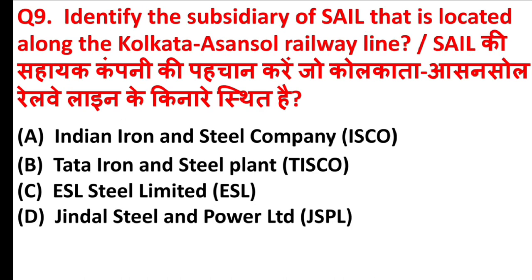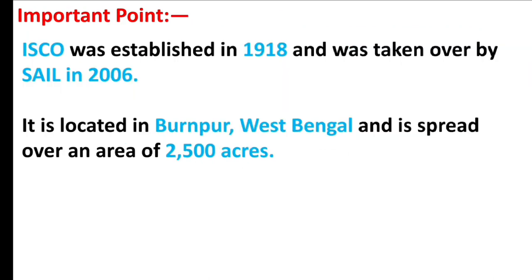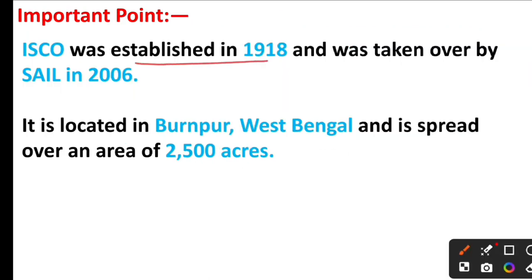Identify the subsidiary of Shell that is located along the Kolkata–Asansol Railway line. The answer is Option A, Indian Iron and Steel Company. IISCO was established in 1918 and was taken over by Shell in 2006. It is located in Burnpur, West Bengal, and is spread over an area of 2,500 acres.